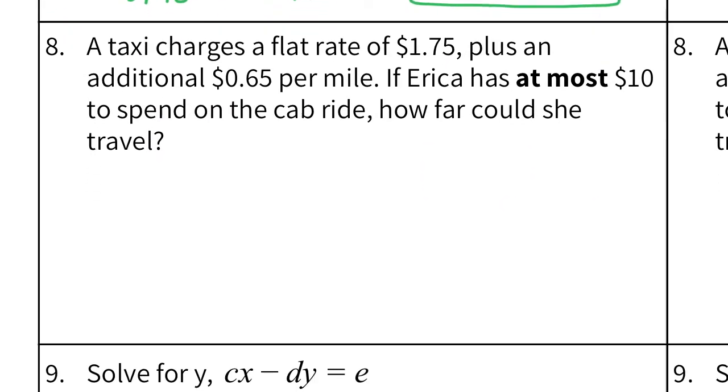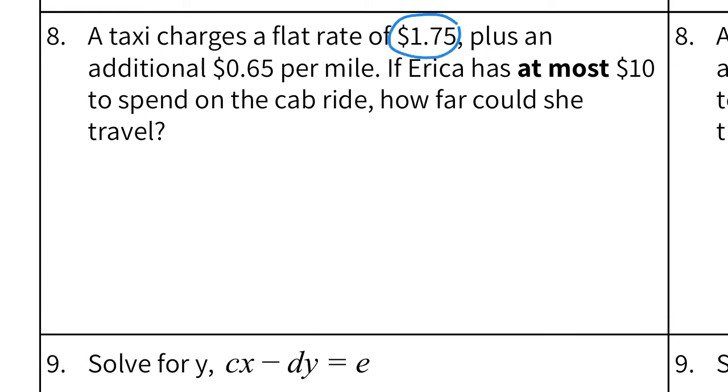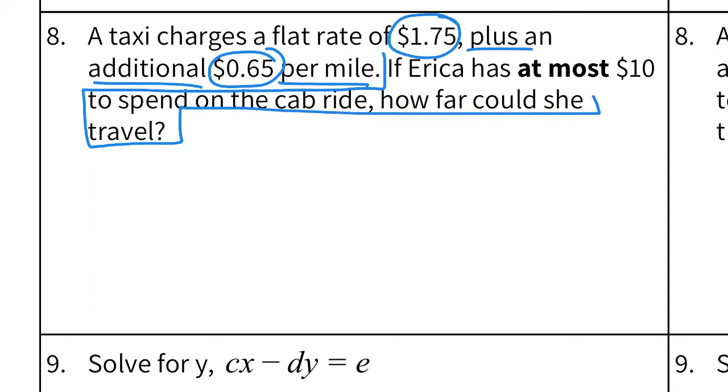The next one is another word problem. A taxi charges a flat rate of $1.75 plus an additional $0.65 per mile. If Erica has at most $10 to spend on a cab ride, how far could she travel? And see how at most is in bold? This is not going to be an equal sign. This is going to be an inequality. And again they're asking about how far she can go. And in the problem it says miles. So again I'm going to use M to mean mile. So if she has at most $10, she cannot spend anything over that. So she has to stay under $10. So we are going to use the less than symbol. But if she has $10, can she spend exactly $10? Well sure she can. She can spend everything she has. So in this case we need the or equal to. So now let's go back and figure out the first part of this inequality. They charge a flat rate of $1.75. And then an additional 65 cents per mile.